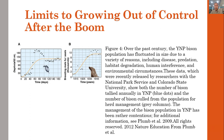This illustration shows the limits of growing out of control. In Figure 4, over the past century, the Yellowstone National Park Bison population has fluctuated in size due to a variety of factors, including disease, predation, habitat degradation, climate change, human interference, and environmental circumstances. This data, released by researchers with the National Park Service at Colorado State University, shows both the number of bison tallied annually in Yellowstone National Park and the population figures used for herd management.